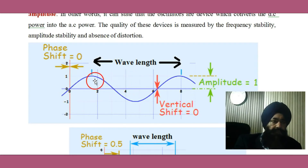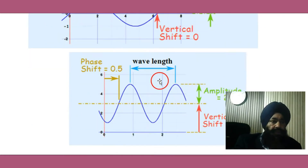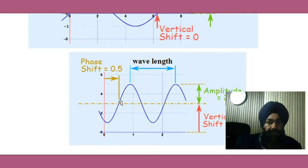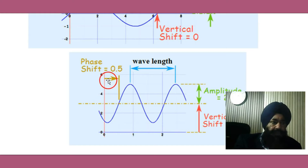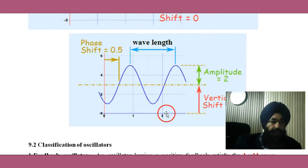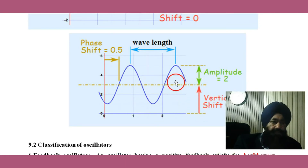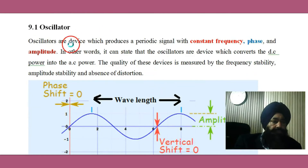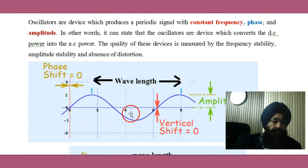Wavelength is measured from crest to crest. In another case, the starting point of the wave is at a different point, meaning there is a phase shift of 0.5 units. And because the wave is above the zero level, there is a vertical shift as well, but the amplitude remains the same — two units. That means the oscillator produces this type of wave of some frequency.